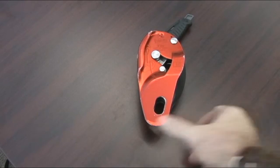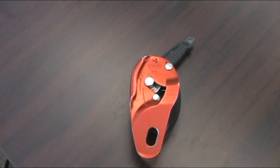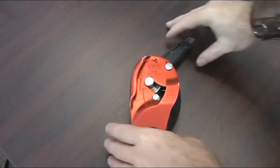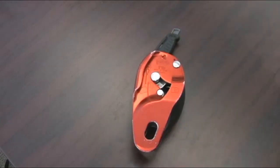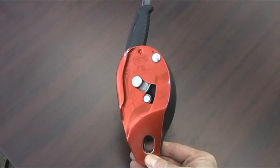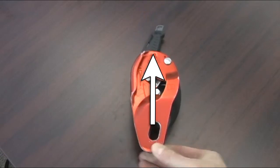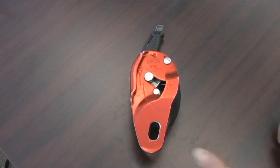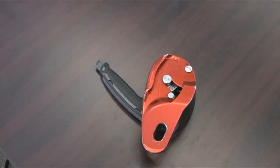Position number three would be the belay position, and that really is just with the handle pointing straight up and away from you. Position number four would be the descent position. That's either for lowering somebody or if you yourself are repelling.